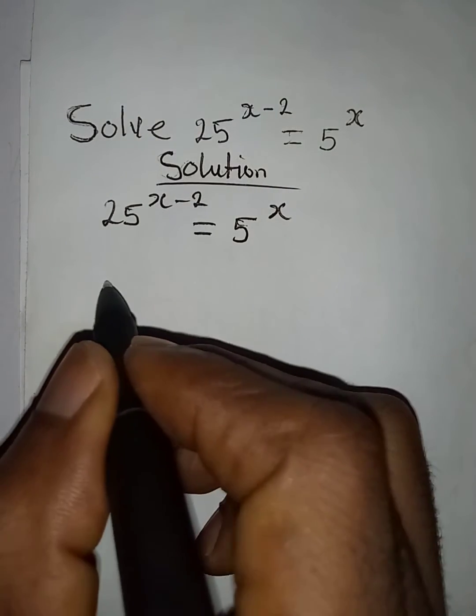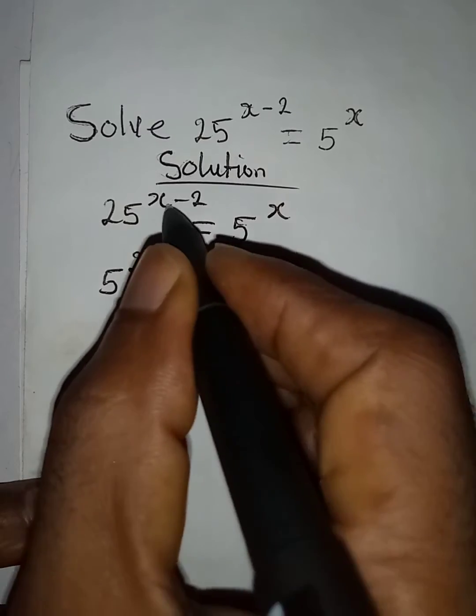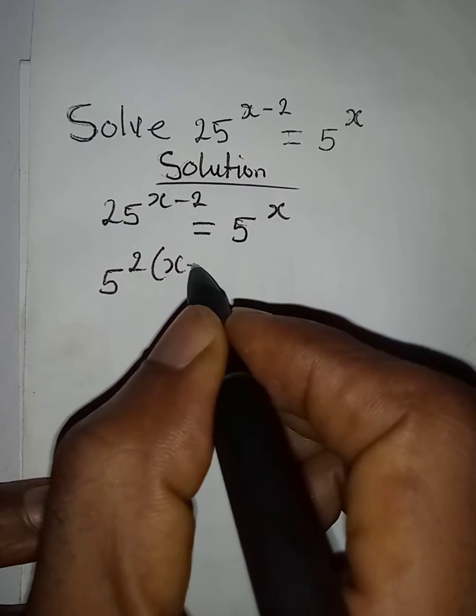Let's break it down. 25 is the same thing as 5 squared, then open the bracket you have x minus 2.